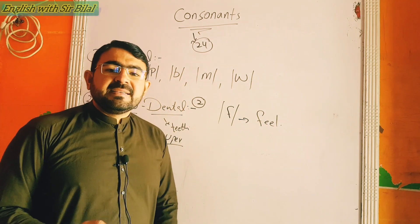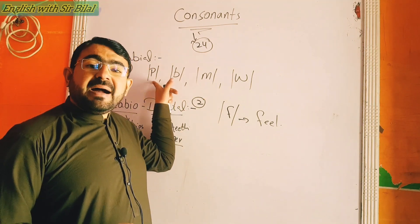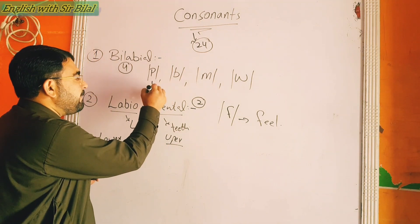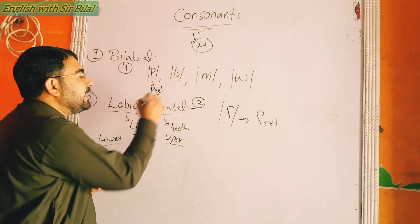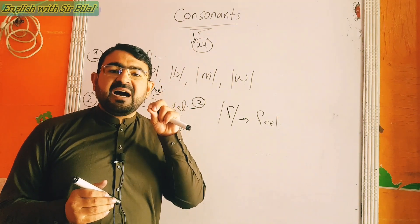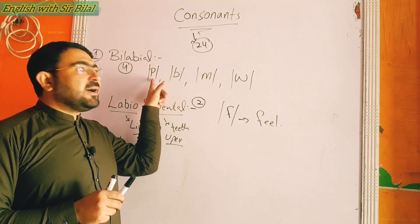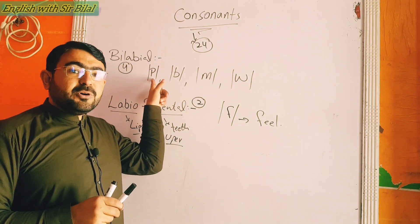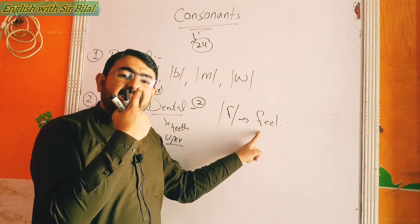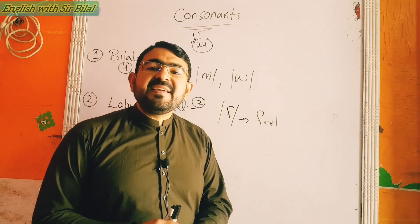Sometimes we mispronounce /f/ as /p/. But /p/ is a bilabial sound. For example: 'peel' — P-E-E-L — has the sound /p/. When you close both lips hard and push air forward you produce /p/. Here, you touch one lip and the upper teeth — lower lip and upper teeth — to produce /f/. Feel.